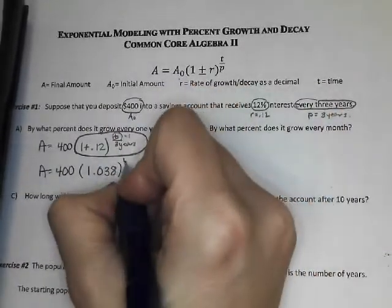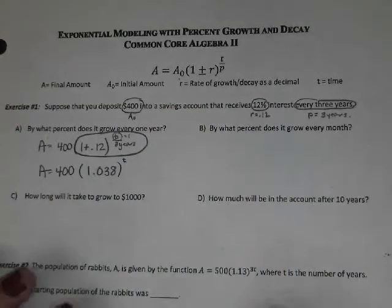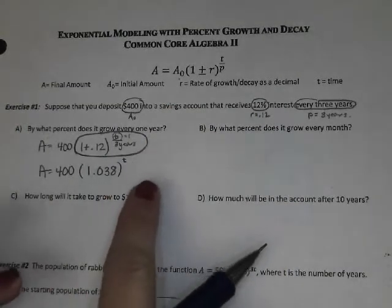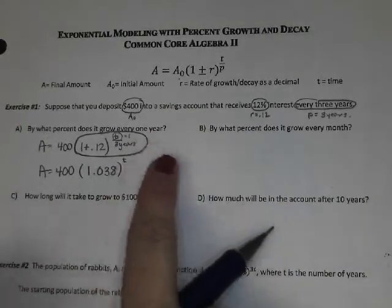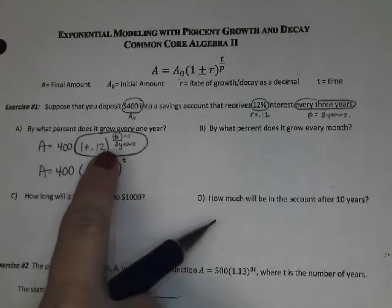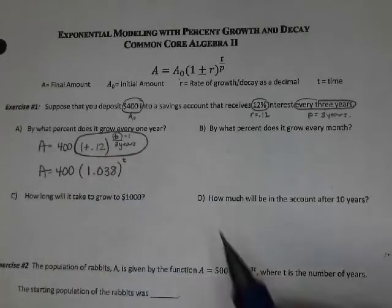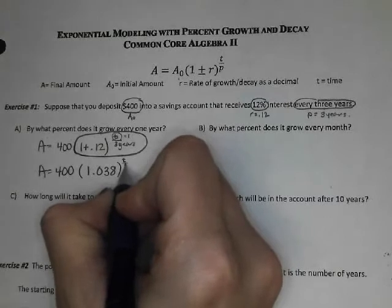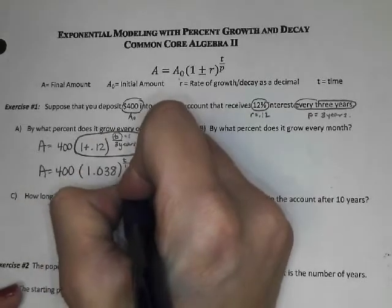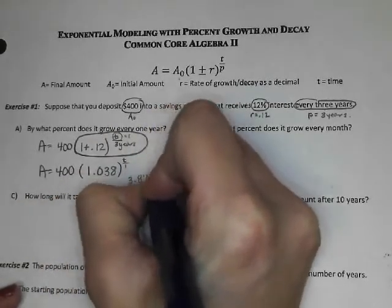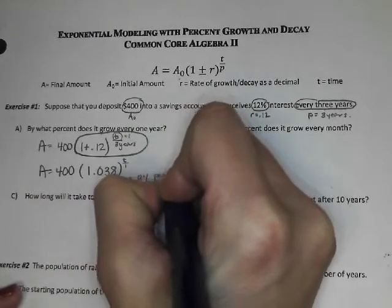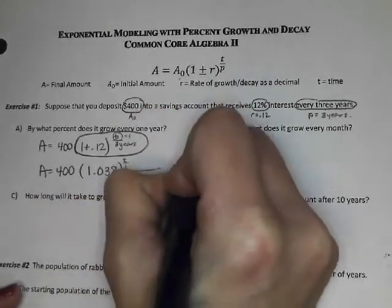And it actually changes that to 1.038, we'll say, to the T power. So what I did there is I just changed that to 1 to convert this three-year percentage of 12% to a one-year percentage. So now this is technically over 1, and we know it grows by 3.8% per year.